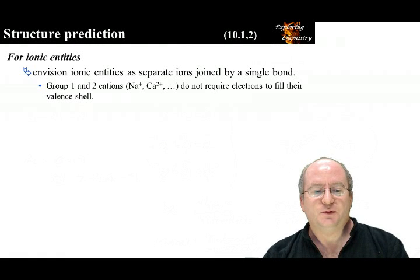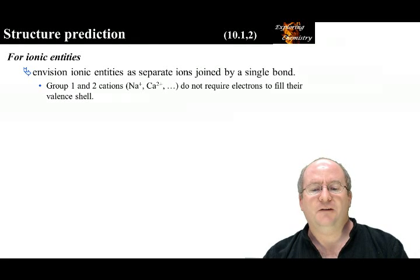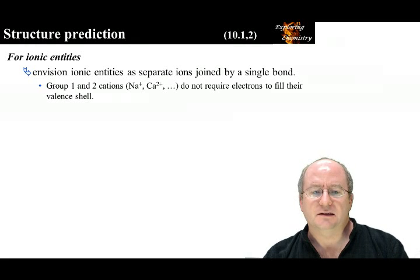Sometimes we wish to determine the structure of ionic entities. In these cases, it is often convenient to consider the separate ions and then join the cation and anion with a single bond.